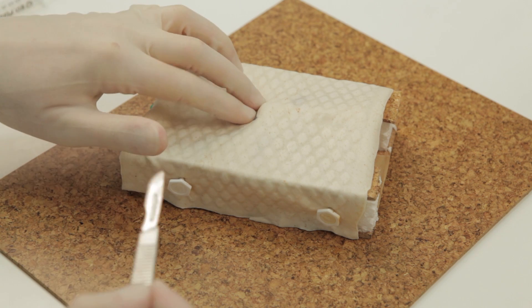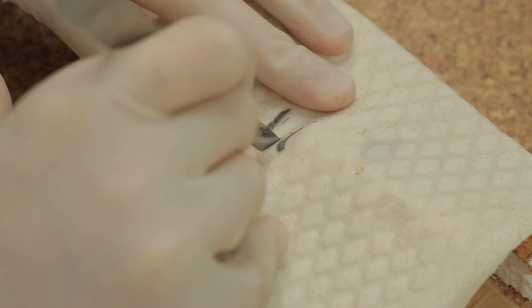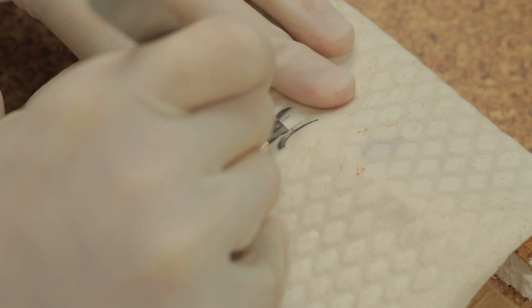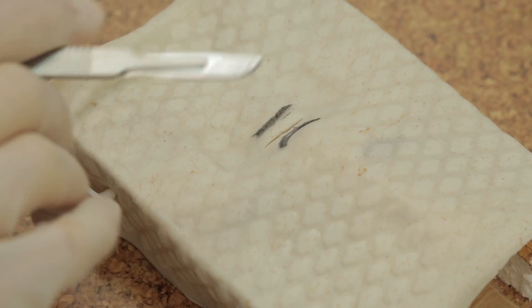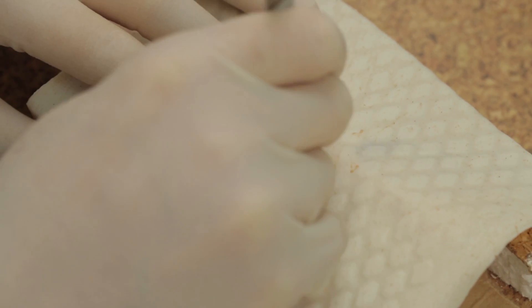For an emergency tracheostomy, incise the cricothyroid membrane using a scalpel blade. Using the handle of the scalpel in a rotatory motion, widen this incision.